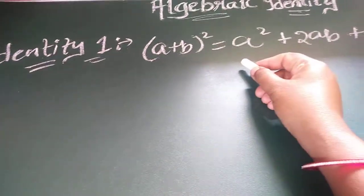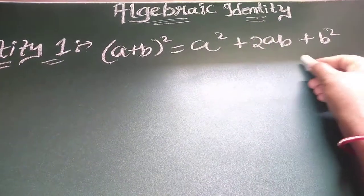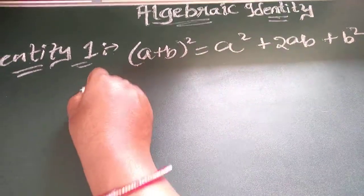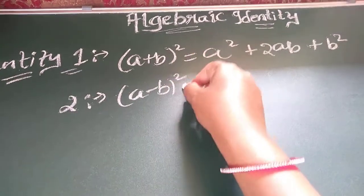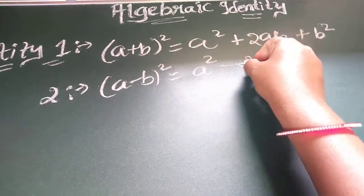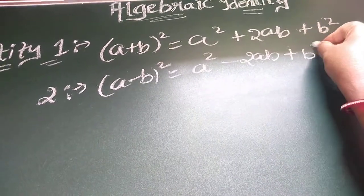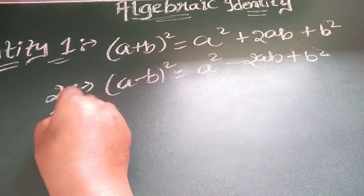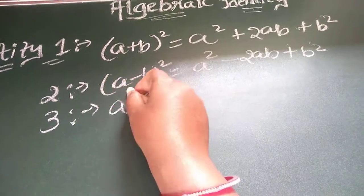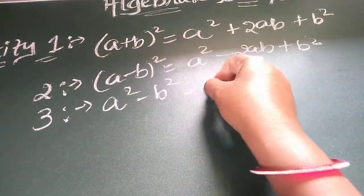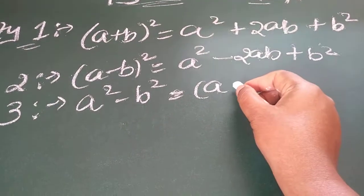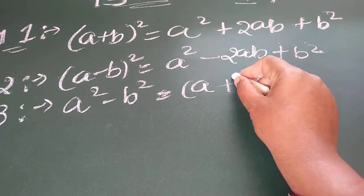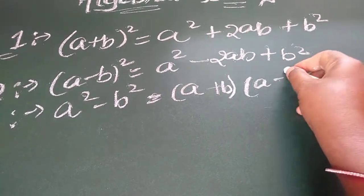Our first identity is a plus b whole square equal to a square plus 2ab plus b square. Our second identity is a minus b whole square equal to a square minus 2ab plus b square. Our third identity is a square minus b square equal to a plus b into a minus b.